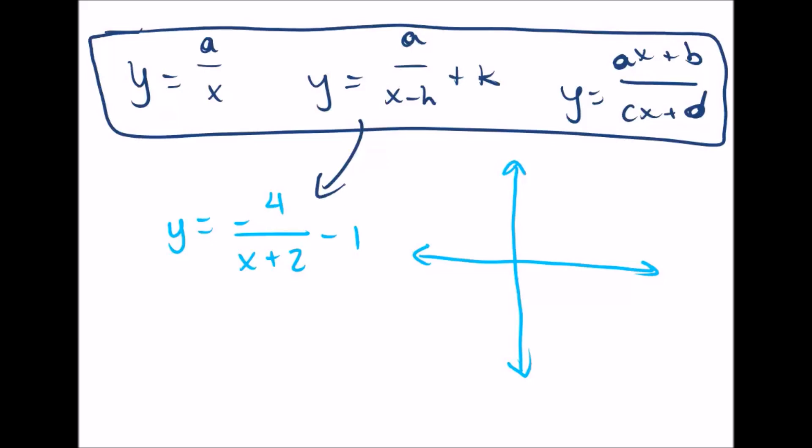So like we said, when it becomes more complicated, we're going to shift those asymptotes. That's the first thing we need to do. We need to draw the asymptotes, the x one and the y one.